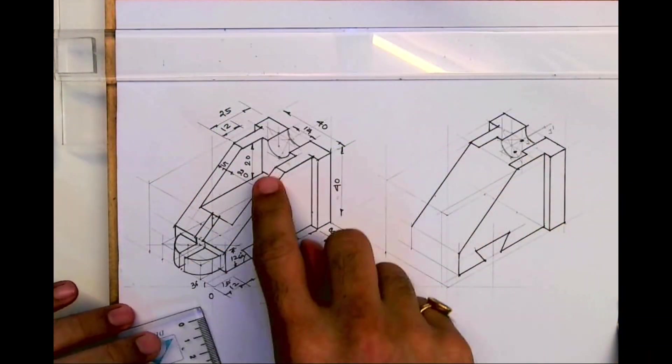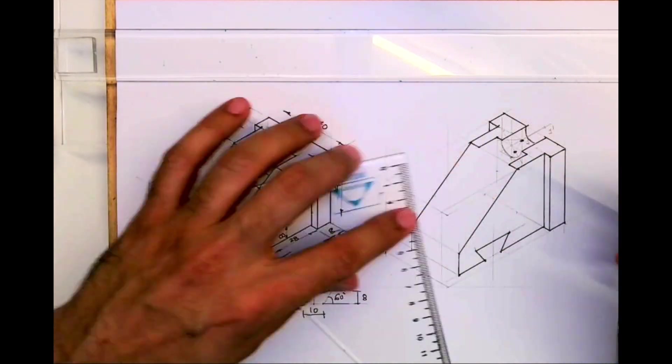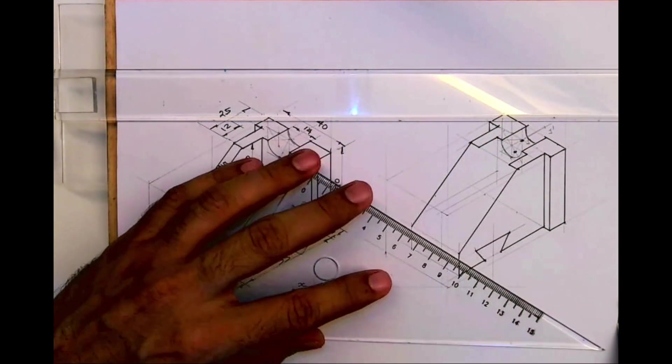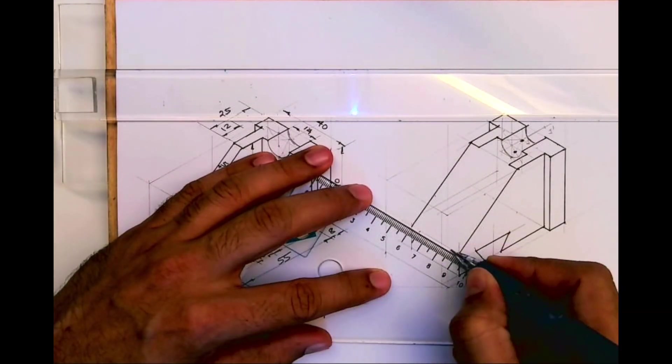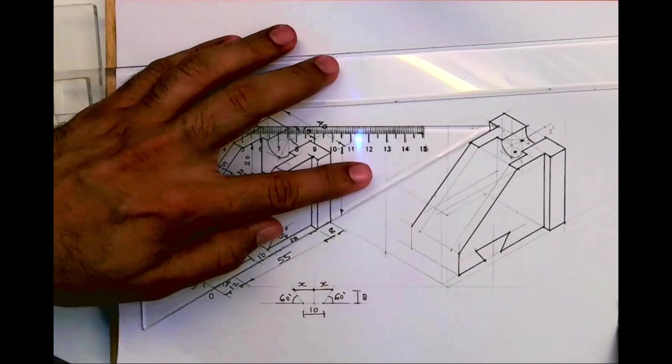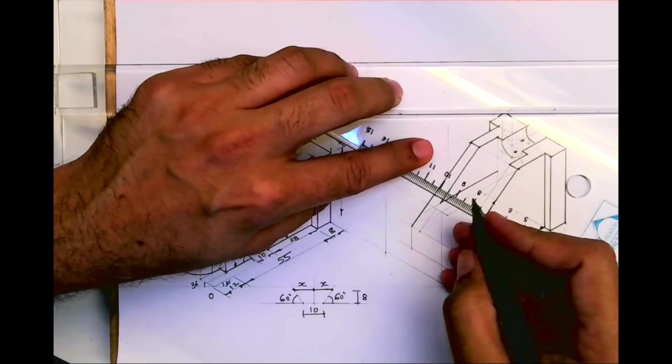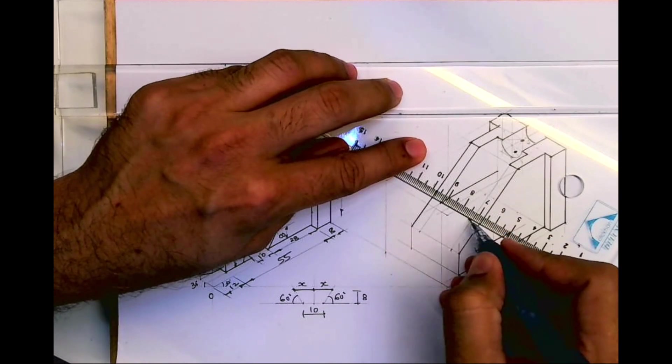And line like this. Now this part will go down by 20 and we'll extend this, but we don't know where to stop. And we know this is 35 on both the sides and we will draw this slope. So wherever it is intersecting, from there I will draw this.